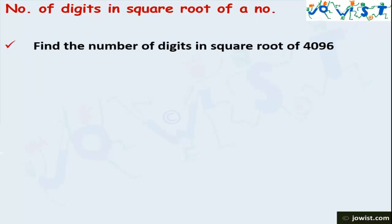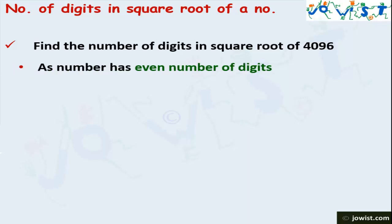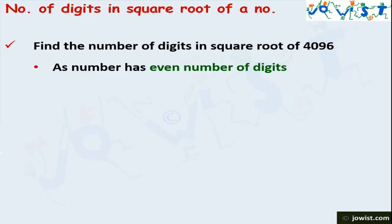Now let's find the number of digits in the square root of 4096. This number has 4 digits. Since 4 is an even number, we will use the formula m / 2. So 4 / 2 = 2. This means 4096 will have 2 digits in its square root.